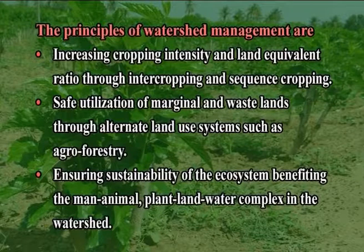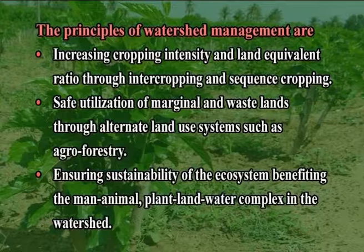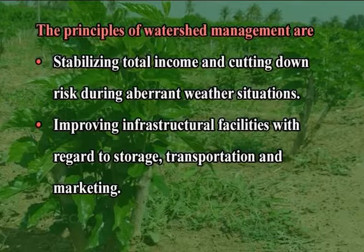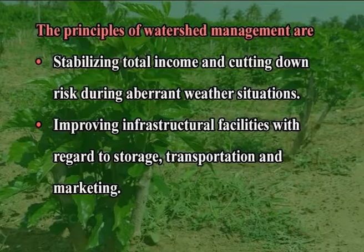Further principles include: increasing cropping intensity and land equivalent ratio through intercropping and sequence cropping; safe utilization of marginal and waste lands through alternate land use systems such as agroforestry; ensuring sustainability of the ecosystem; benefiting the man-animal-plant-land-water complex in the watershed; stabilizing total income and reducing risk during aberrant weather situations; improving infrastructural facilities with regard to storage, transportation and marketing. Comprehensive planning for water management starts with obtaining suitable maps through remote sensing techniques.